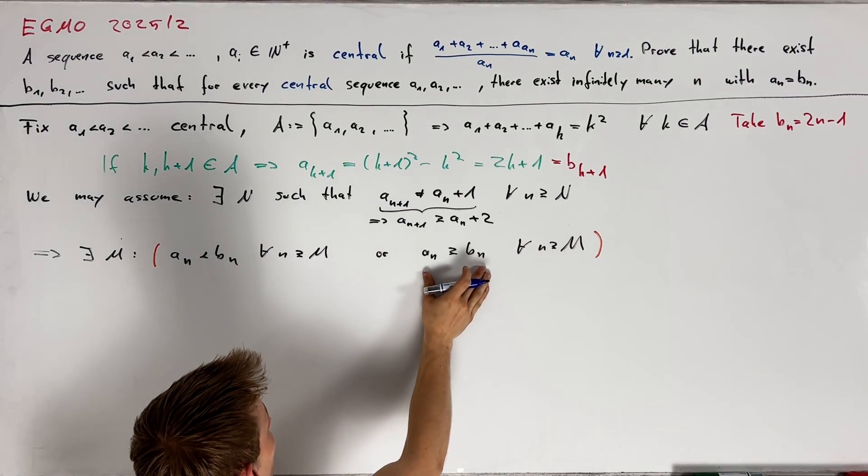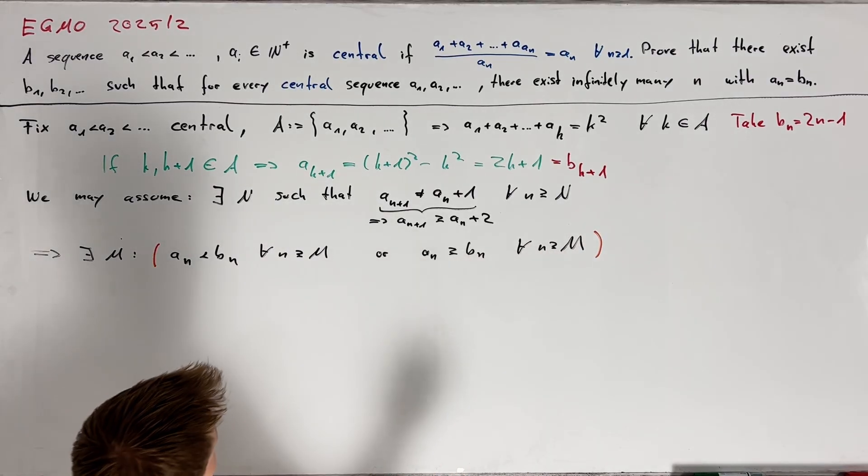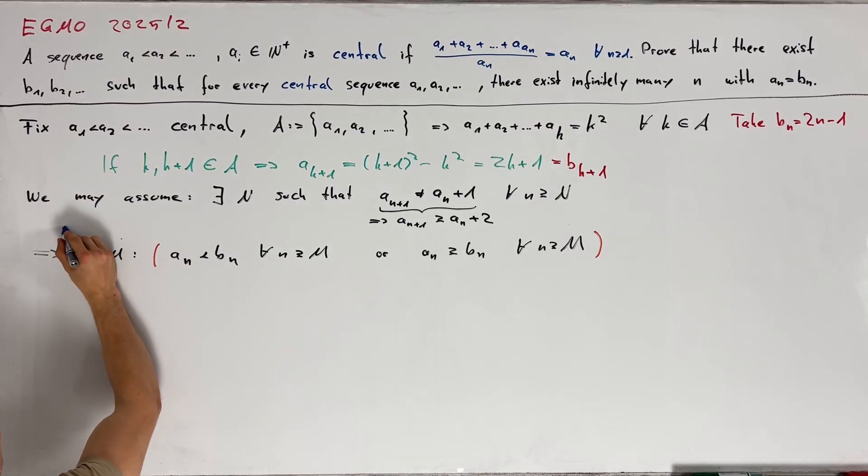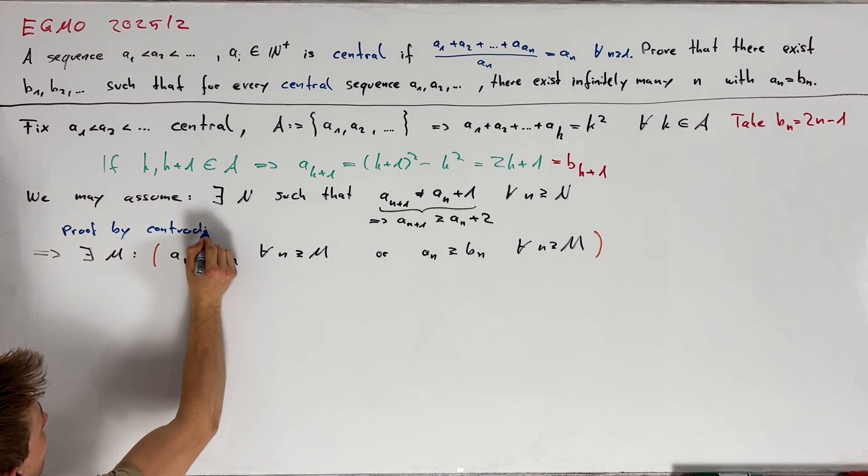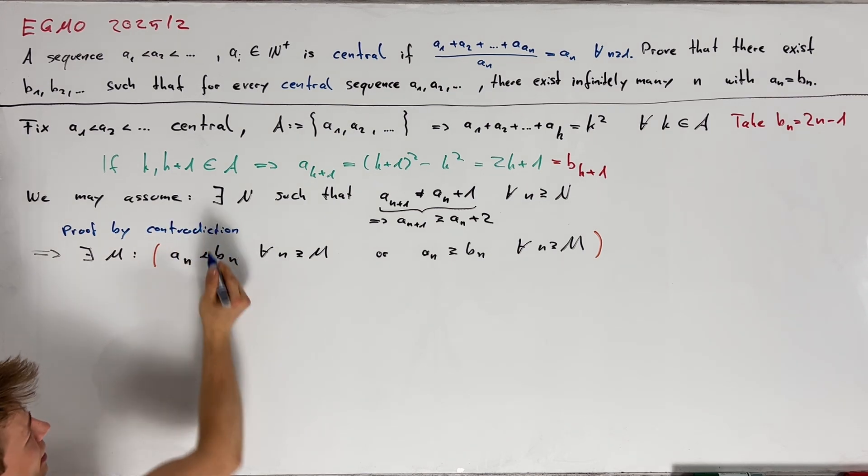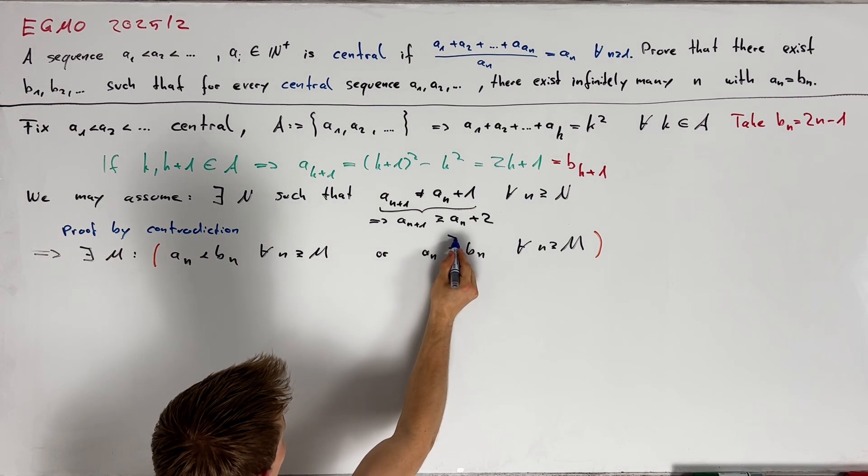If we have equality here infinitely many times then we are done. And therefore we can do a proof by contradiction and take a strictly greater sign here.